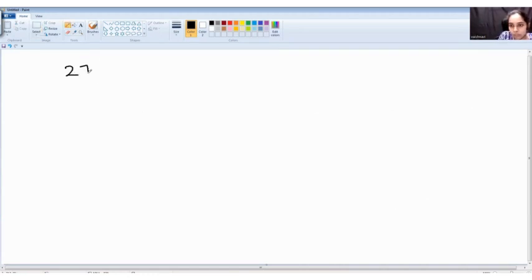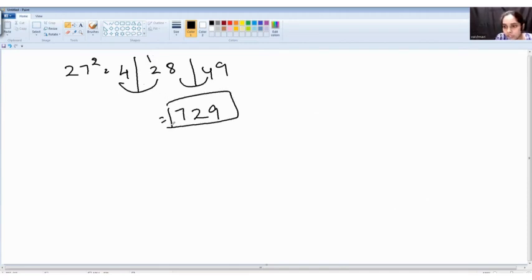Let's look into a few more examples. 27 square. 2 square is 4, 7 square is 49, 2 into 2 is 4, 4 into 7 is 28. Need to add this, that's all. 9, 8 plus 4 is 12, 1 carry, 2 plus 1 is 3, 3 plus 4 equals 7. So it is 729.